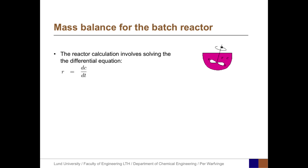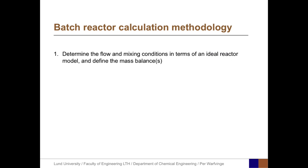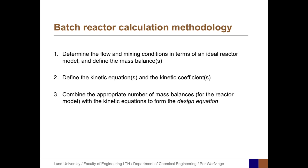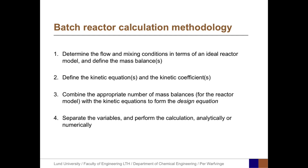Reactor calculations for the batch reactor involve solving the differential equation R equals dC/dt. The general integral providing the solution integrates between the initial concentration and the final concentration on the left side, and between time equals zero and any other time on the right side. There are four steps: first, determine flow and mixing conditions using an ideal reactor model; second, define all kinetic equations and coefficients; third, combine the mass balance with the kinetic equation to form the design equation; and fourth, separate variables and perform the calculation analytically or numerically.